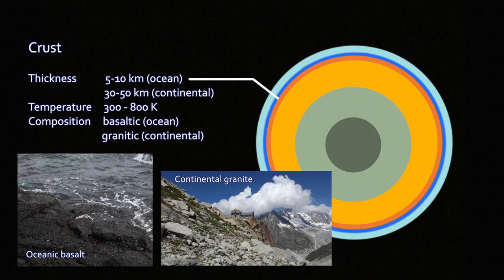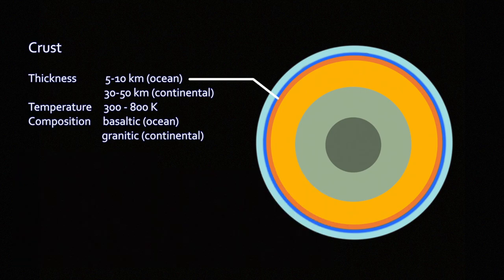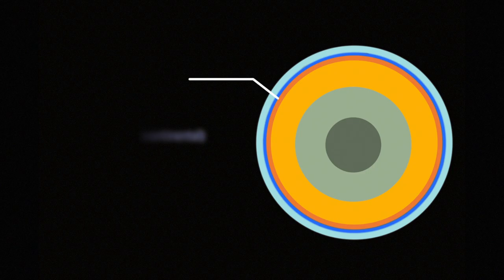It's made of lighter rock, granite, more silica-rich, less magnesium and iron in the rock, and more aluminum, calcium, sodium, potassium. The continental granitic rock is less dense than ocean crust.